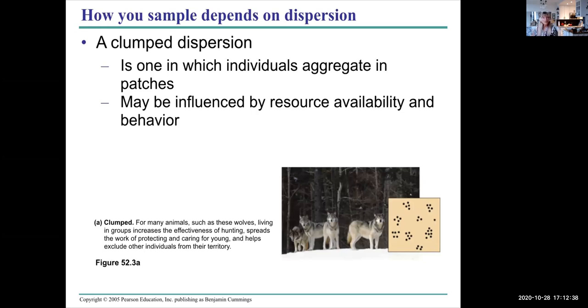A lake on the mountain, for example—would most of the plants be on the sunny side or are they shade tolerant plants? Where would you find them? A clump dispersion is where individuals aggregate in patches, often influenced by resource availability.